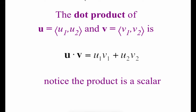The dot product is another type of operation that we can perform on vectors. If we've got vector u as the component form (u1, u2) and vector v as (v1, v2), then doing the dot product u·v means we multiply the x-values from our vectors together and then add on the y-values multiplied together. One thing we should notice is that the answer — the product — is a scalar, or just a plain constant number.